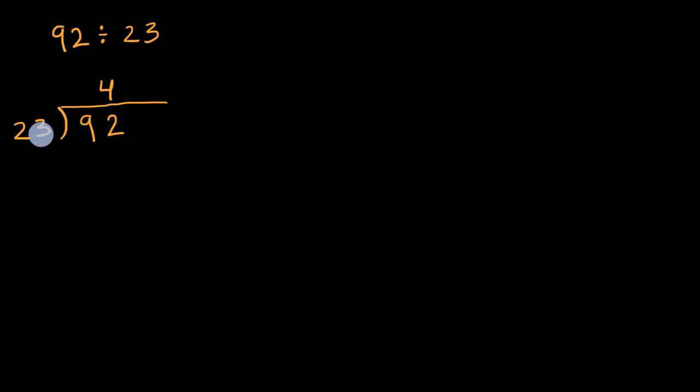Four times three is 12. Four times two is eight plus one is nine. That worked out nicely. Four times 23 is exactly 92. I have no remainder. So there I have it, 92 divided by 23 is equal to four.